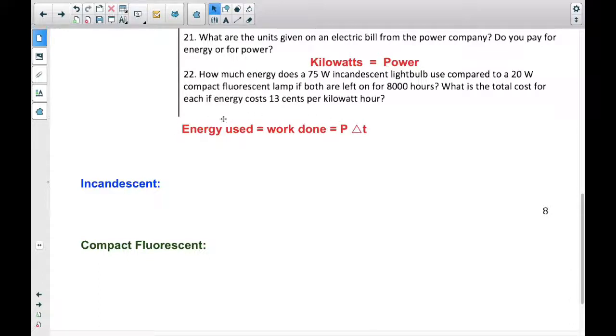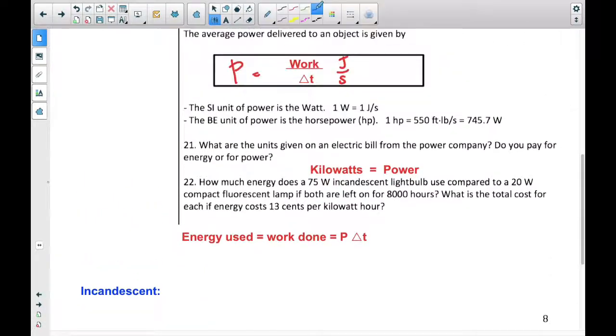Okay, so energy used is the work done. And the work done is power times time. We go back to our equation here. If we're solving it for work, we would multiply both sides times T. And so work is power times the change in time. We just rearrange that equation. So work is power times time.